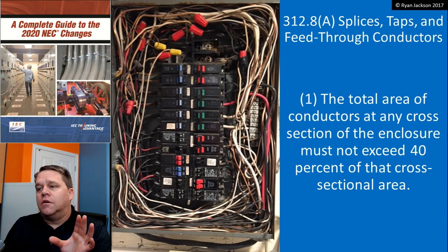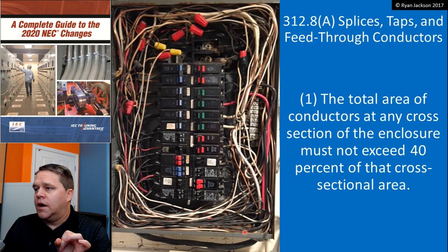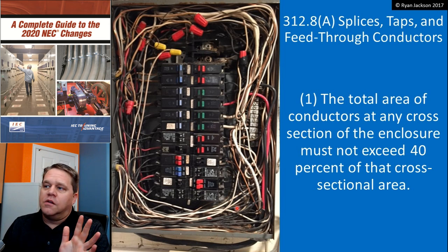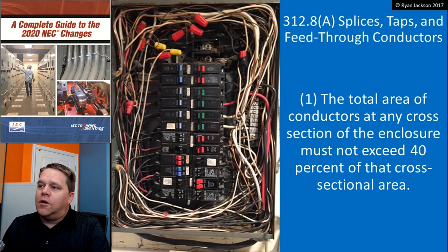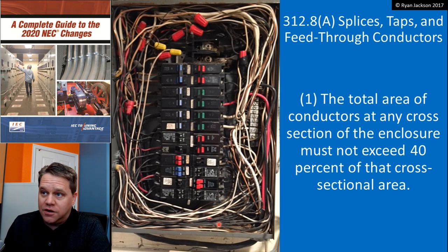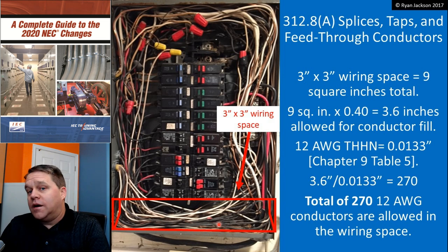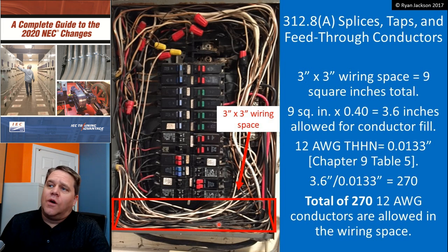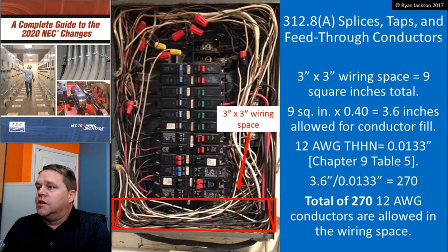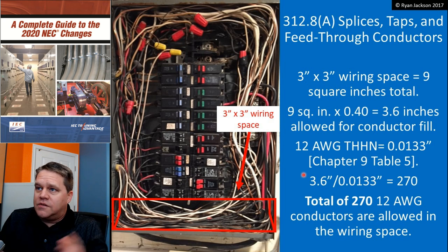I don't think it's possible because I've done the math and it's very surprising. Let's say the wiring space is three inches by three inches, and let's pretend all of these are 12-gauge wire — how many 12-gauge wires could you put in that area before violating this section? The answer is 270. You're not going to violate this section even if you wake up and say you're going to. Splice as much as you want in a cabinet that contains a panelboard — you're not going to violate this rule.